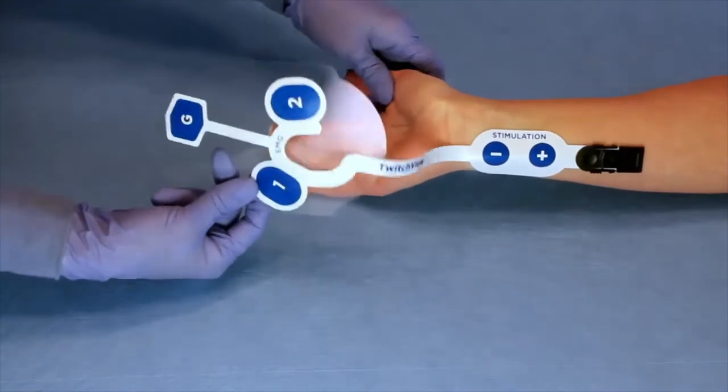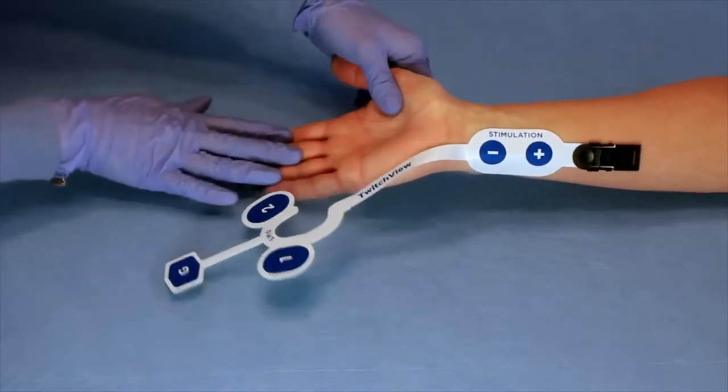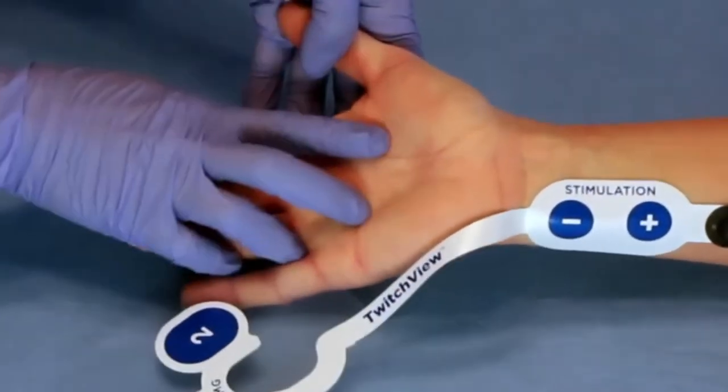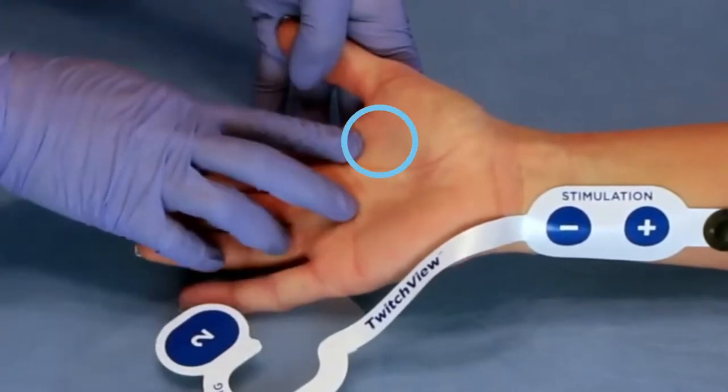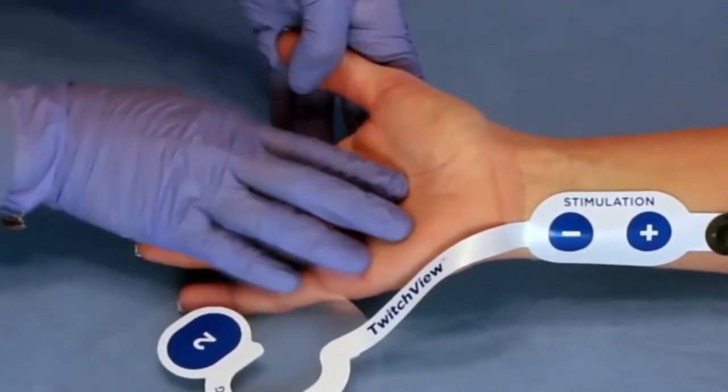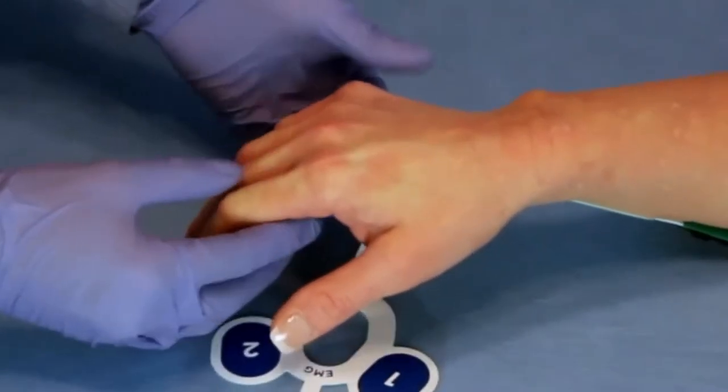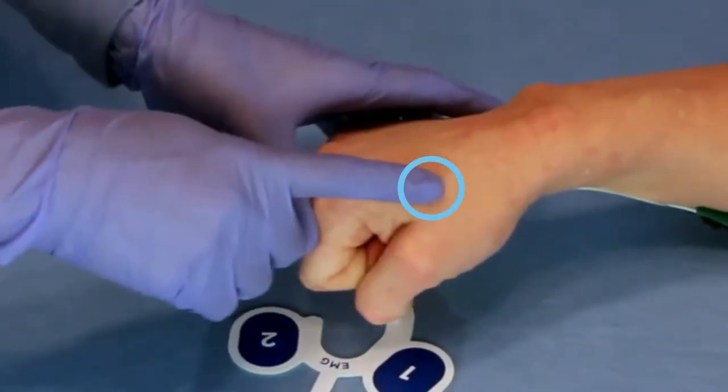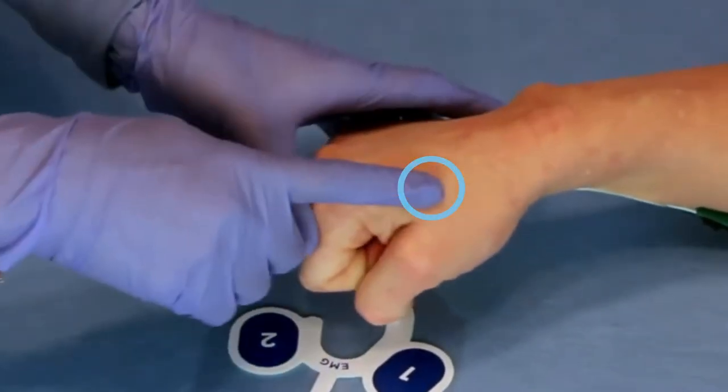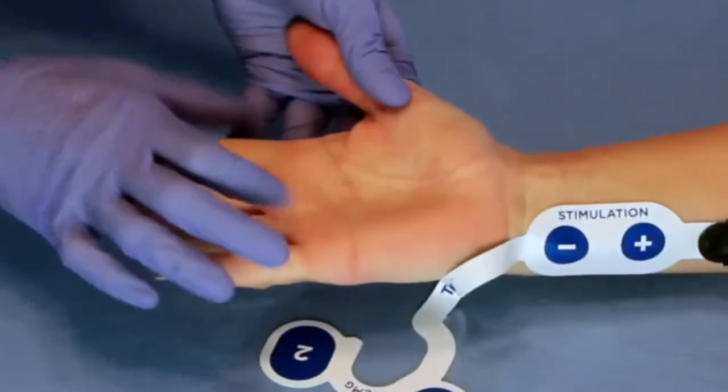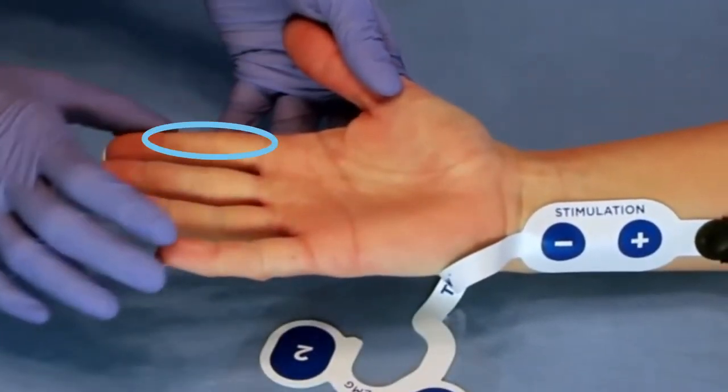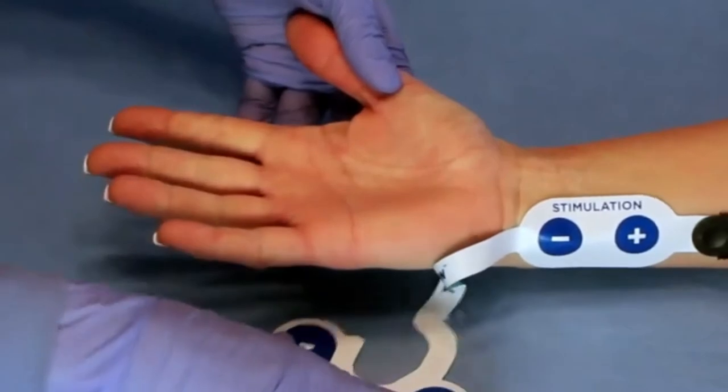The EMG or electromyography recording electrodes are placed over the adductor pollicis just distal to the thenar eminence and on the first dorsal interosseous muscle on the back of the hand. The ground electrode is placed on the index finger.